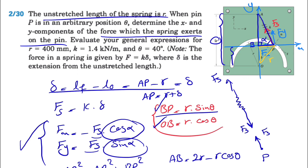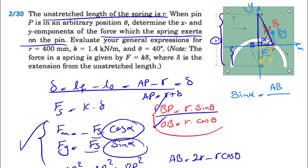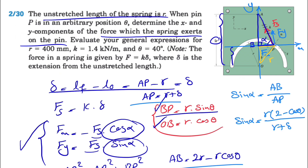For sin(α), using the right triangle: sin(α) = opposite / hypotenuse = AB / AP. We found AB = r(2 − cos(θ)), so sin(α) = r(2 − cos(θ)) / (r + δ). Similarly, cos(α) = adjacent / hypotenuse = BP / AP = r·sin(θ) / (r + δ). In the second part of the question, since r, k, and theta are all known, we can find delta and then compute sine and cosine of alpha.